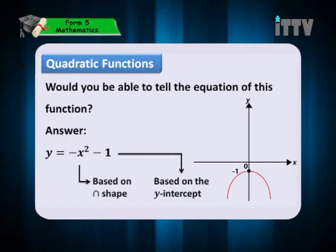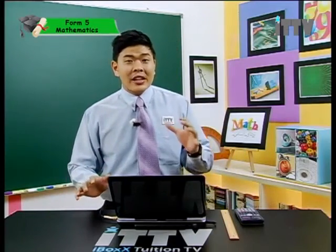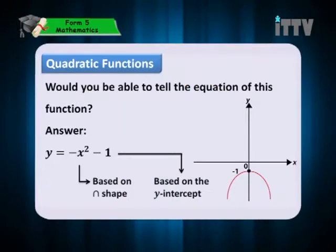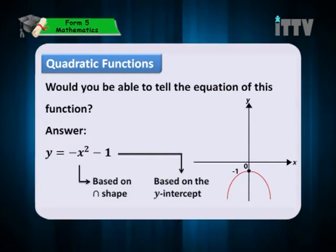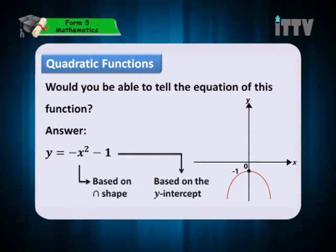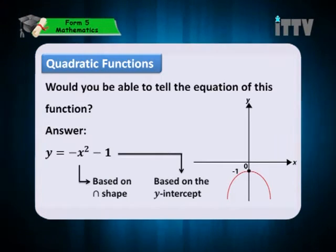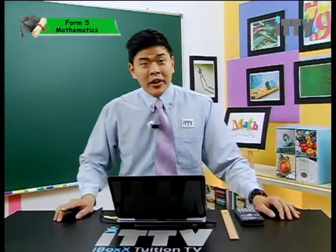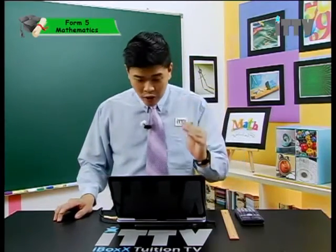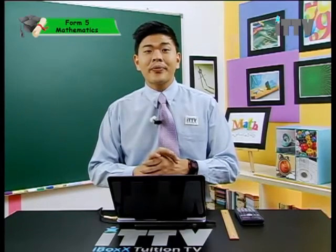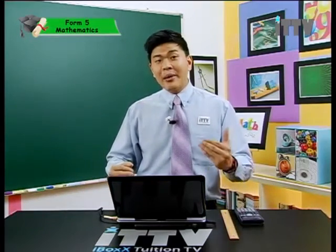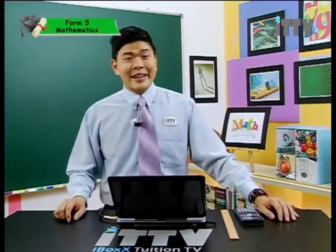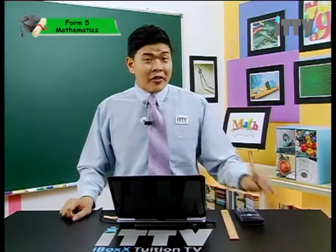Would you be able to tell the equation of this function? You have already known the basic methods of identifying a quadratic function. This graph would have an equation of y equals to negative x-square minus 1. Why negative x-square? Because it is in the shape of an n or a sad face. If the coefficient of x-square is positive, the graph would be a smiley face or a u-shape — it's called a parabola. If the coefficient of a is negative, it would be a sad-face graph.